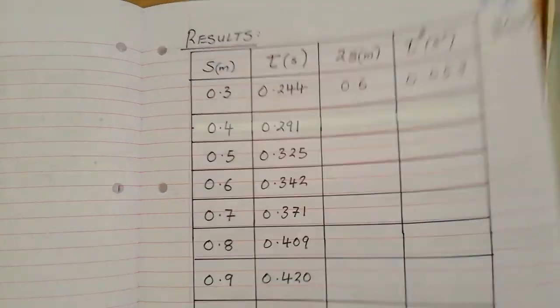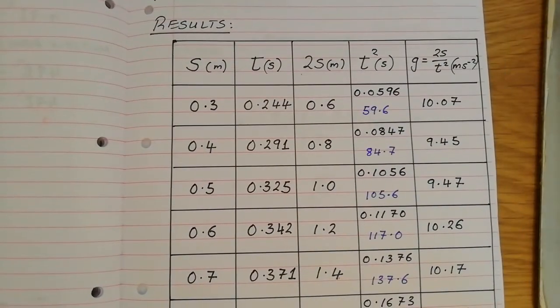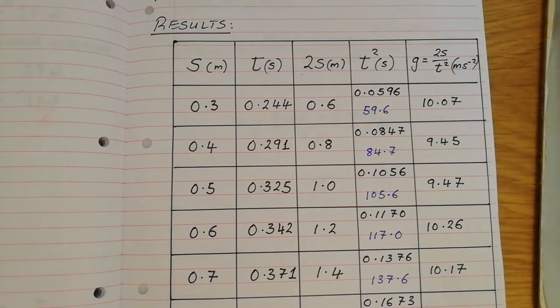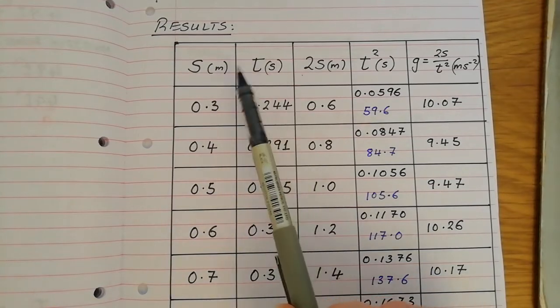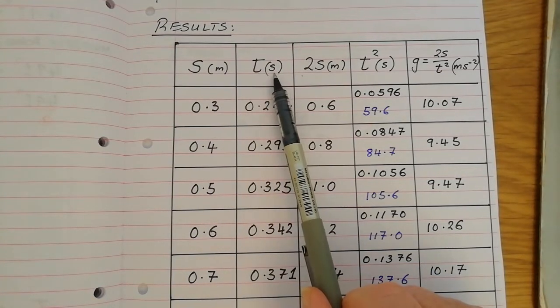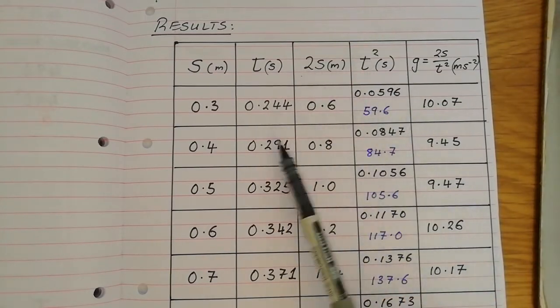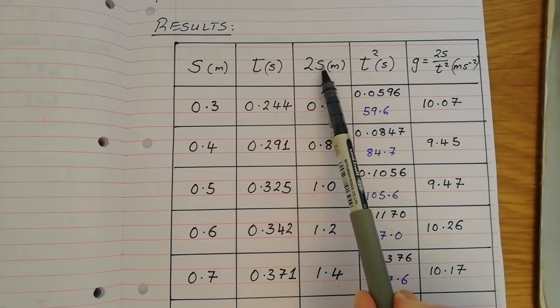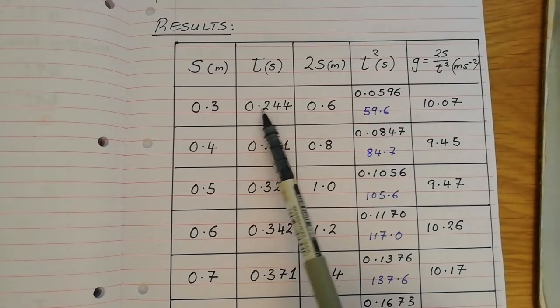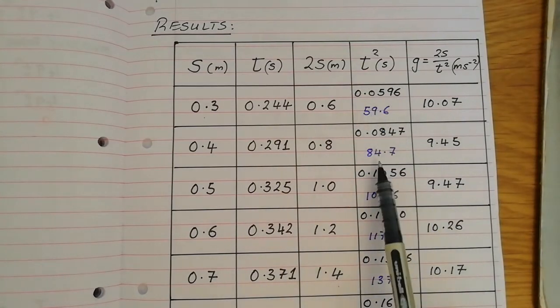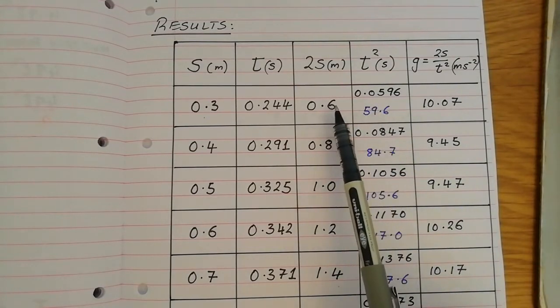Now, it might be a good idea to actually look at a more interesting data table. Now, this is the exact same data, the exact same results, only I've filled in the table a little bit more. Okay, we have s, the distance the ball falls in meters, time, the time on the electronic timer in seconds that the ball falls. And what I've done is, I've filled in the different columns. 2s, I've just doubled in each case. Time squared, I just put that into the calculator and squared it. Ignore the little figures in blue for the moment.